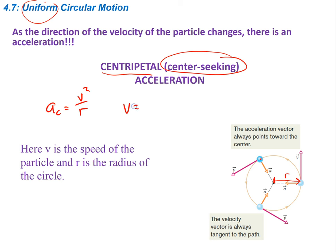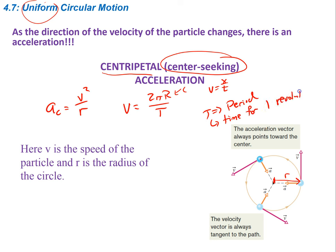We also have another equation: velocity is equal to 2πR over T. Essentially this is just our regular velocity equation — velocity equals distance over time. The distance traveled in one full circle is simply the circumference, which is 2πR, and it's over a capital T. Capital T indicates the period, which is the amount of time for one revolution. So these two equations are the main ones we're going to use in this chapter.